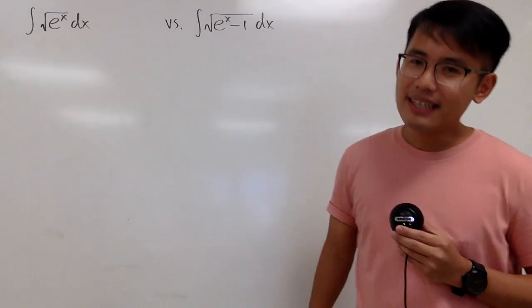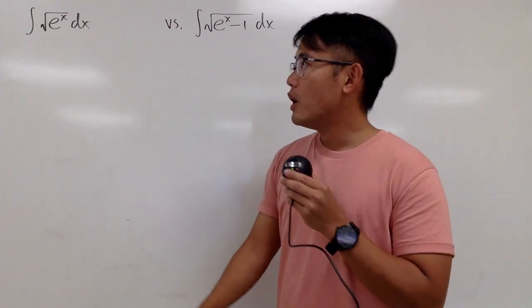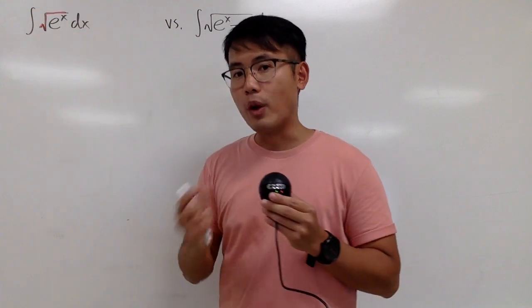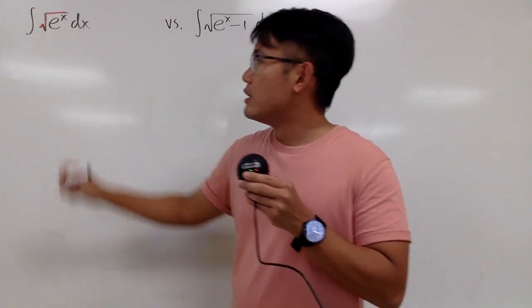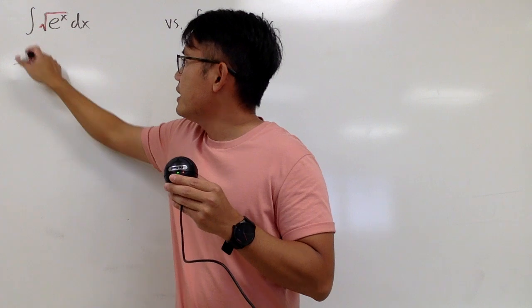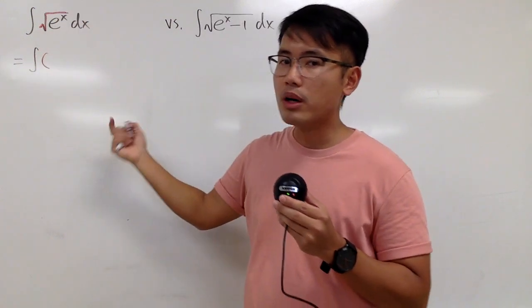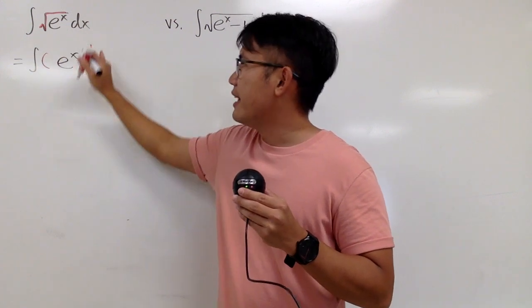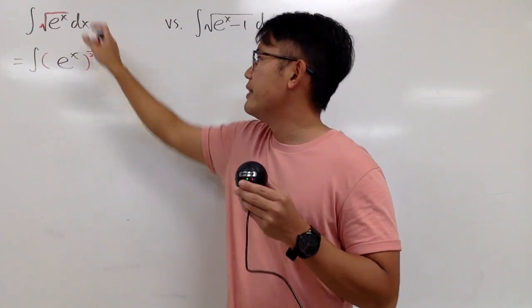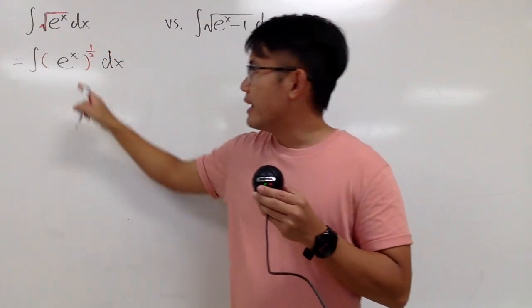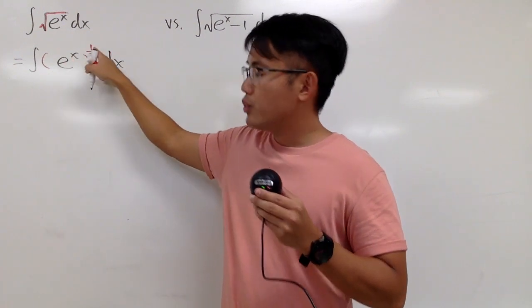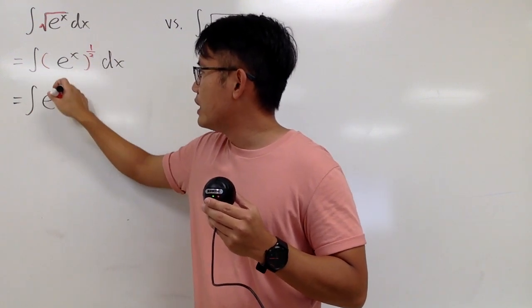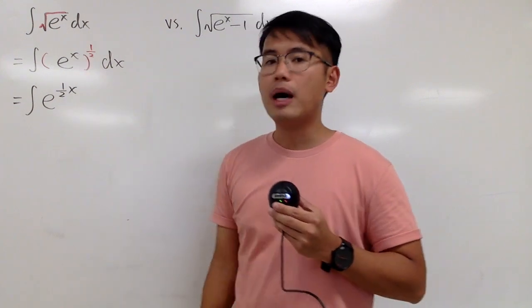Let's do the easier one first. I noticed that we have a square root and the inside is just one term, e to the x. So I will write this as the integral and change this to the 1/2 power — e to the x raised to the 1/2 power — with dx. You see, e to the x to the 1/2 power is the same as integrating e to the (1/2)x. We can just multiply the powers.